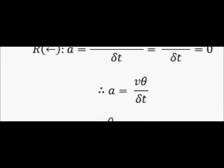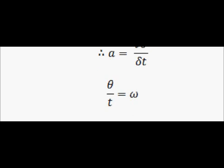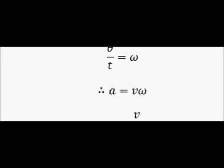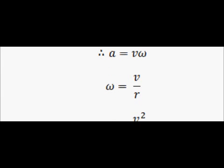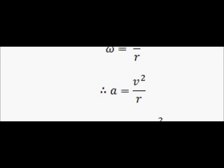So the only acceleration is vertical. We can say that a equals V theta over delta t. We know that theta over t is equal to omega, because omega is the angular velocity — an angle over time is an angular velocity. So therefore a is equal to V omega. We know that angular velocity omega is equal to v over r, so substituting that value for omega into the equation, a is equal to v squared over r. So now we have the centripetal acceleration.